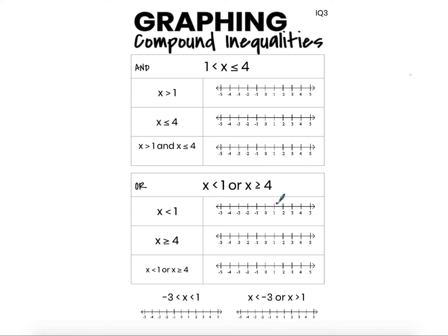When we graph that solution set, we can look at the graph of x is less than 1 first — open dot at 1, because there's no equal sign so 1 is not part of the solution set, and an arrow to the left because we're looking at the numbers less than 1. For the graph of x is greater than or equal to 4, we have a closed dot since there is an equal sign and an arrow to the right since we're looking at the numbers greater than or equal to 4.